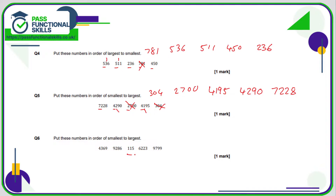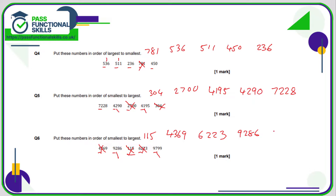Question 6: smallest to largest. We've got a three-digit number among some four-digit numbers, so the three-digit number is the smallest. Comparing the four-digit numbers beginning with 4, 9, 6, and 9 — the smallest will be the one beginning with 4. Then 6 is less than 9 and 9, so 6223 is the next smallest. Now comparing the two numbers beginning with 9 — looking at the second digit, we've got a 7 and a 2. 2 is less than 7, so 9286 is smaller than 9799, which is the largest.